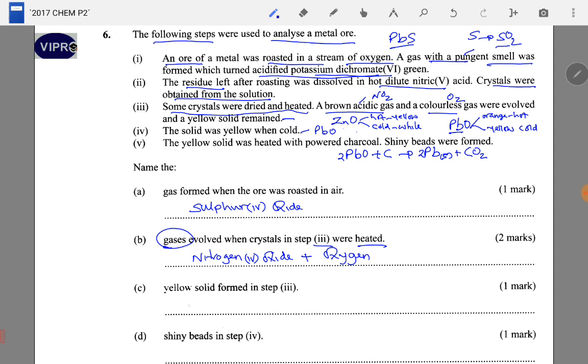The yellow solid formed in step three - we need to give the name, not use the symbols - is lead oxide. The shiny beads: again, we're told to give the name, so it's lead metal.